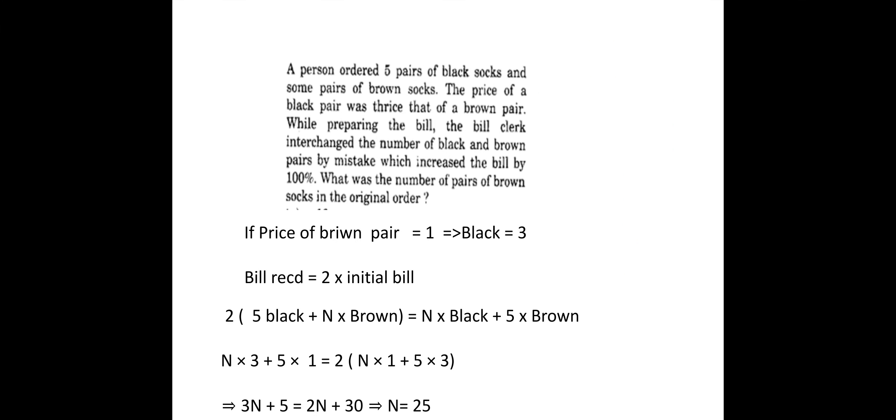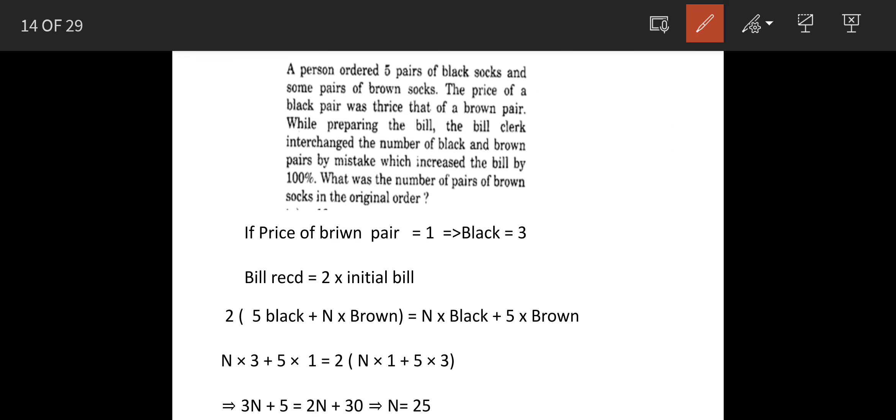Let's see the solution. Let the price of a brown pair be 1 rupee, so a black pair will be 3 rupees, because the black pair is 3 times the brown pair.